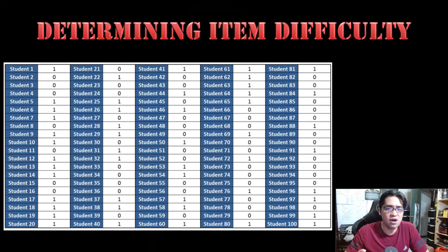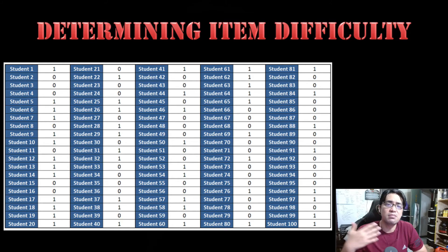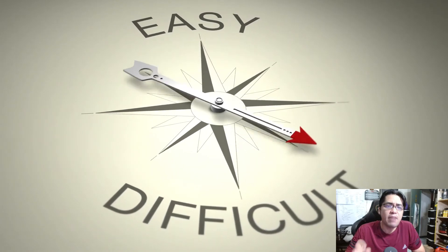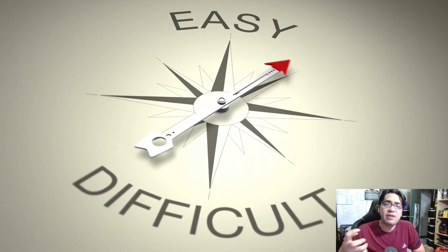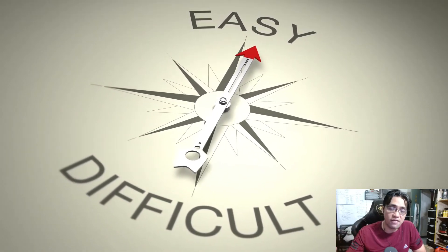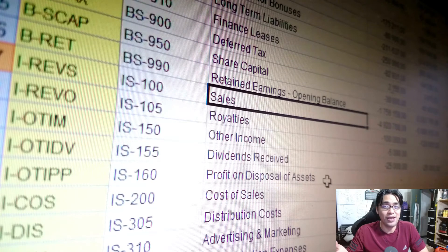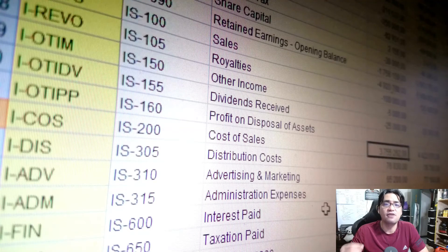Now it's time to talk about the formula and calculation process to determine item difficulty — the item difficulty index. Some of you may ask: why do we need to calculate it? Why not just count correct versus wrong answers? There are a few advantages. By getting the item difficulty index, it's much easier to compare difficulties between items and determine which item is easier or more difficult. Also, calculating it is very easy to automate using spreadsheet programs and statistical software.